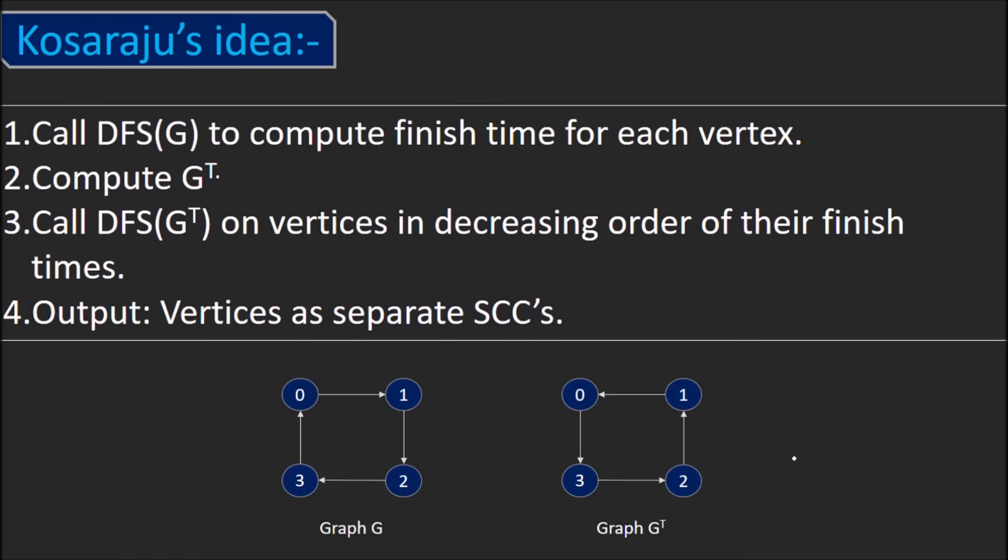Let's look at Kosaraju's idea. Step 1 says call DFS on G to compute finish time for each vertex. A vertex is finished when all its neighboring vertices are already visited during the depth first search. That is, it doesn't have any unvisited neighbors. We need to keep a track of time when each vertex is finished.